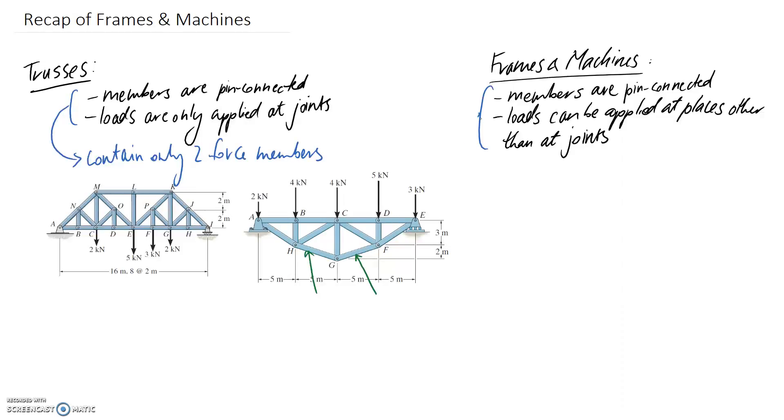So the result here is that because we're saying that forces can be applied essentially anywhere onto the structure, we no longer have just two force members. We have a case where we contain multi-force members.